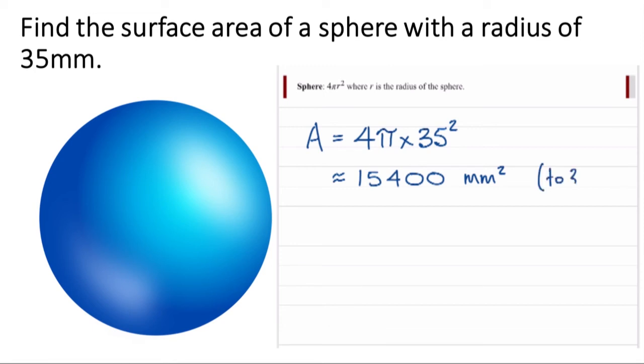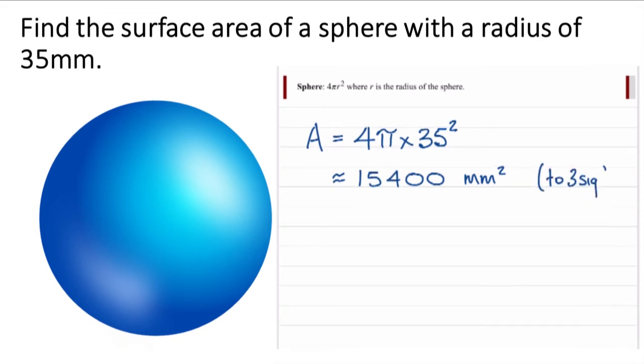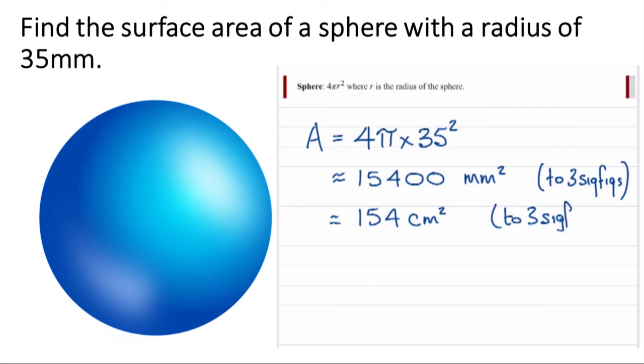Now, what about if we were asked to give the answer in square centimeters? How many square millimeters are in a square centimeter? Well, actually there's a hundred of them. 10 by 10. Because a square centimeter is 10 millimeters wide and 10 millimeters high. So I need to divide that by 100 to get the answer 154 square centimeters.